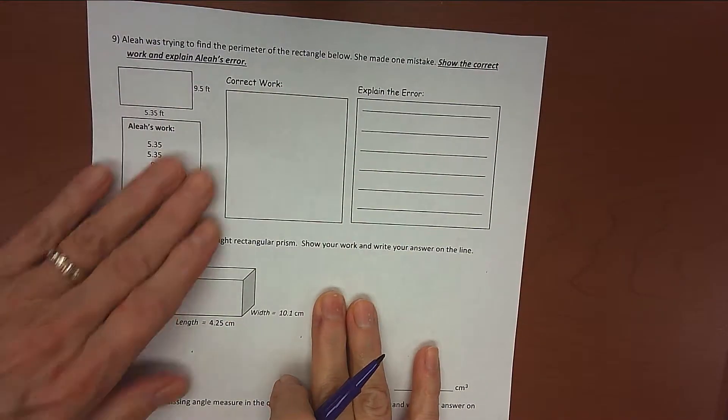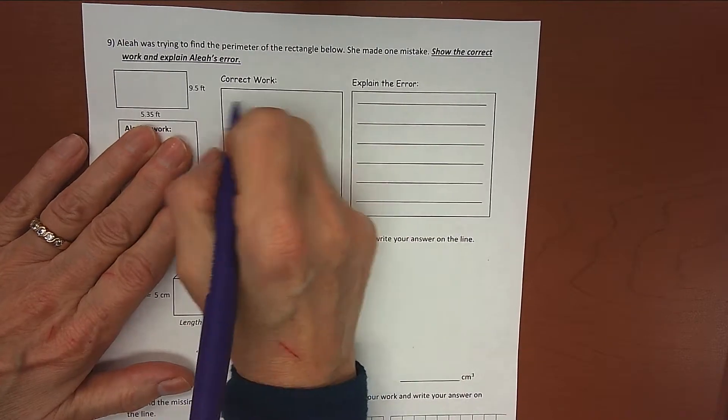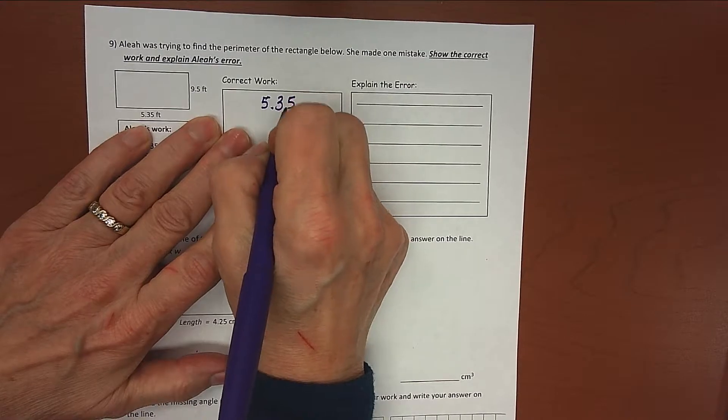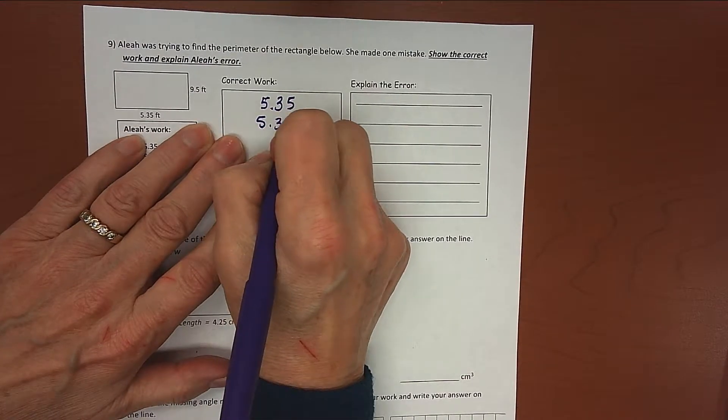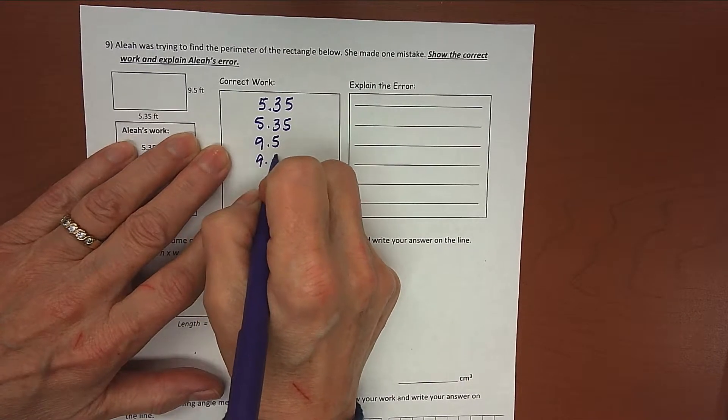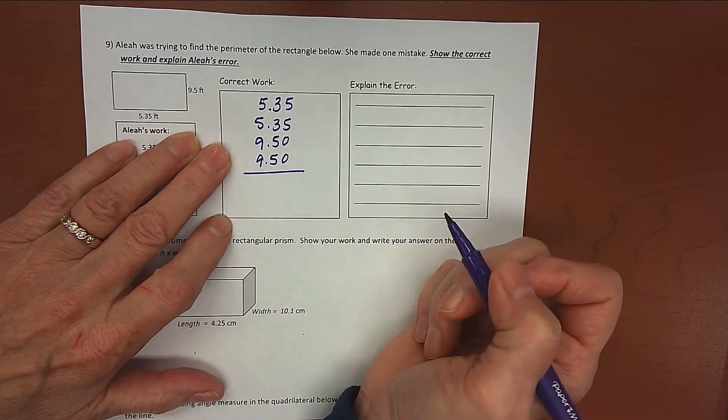I always like to just work it out first, and then it makes it pretty easy for me to find the error. So I'm going to do perimeter, add up all the sides. So we have two sides that are 5 and 35 hundredths, and we have two sides that are 9 and 5 tenths. I lined up my decimal points. I can add a couple zeros here to fill in those empty spaces.